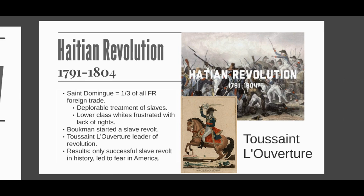Just as the French peasants had burned the manor houses of their aristocratic overlords, Bookman's slave army attacked the planters' estates in Saint Domingue. 40,000 of them marched on the city of Le Cap, where many whites and gens de couleur had taken refuge. The slaughter lasted for weeks until the planter forces finally captured and executed Bookman. They fixed his head on a pole — just like the French did with their pikes — and hung a sign around his neck reading 'This is the head of Bookman, the chief of the rebels.'